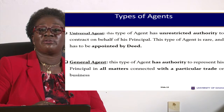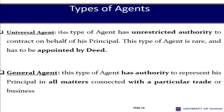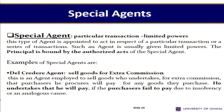A general agent has authority to represent his principal in all matters connected with a particular trade or particular business. Unlike the universal agent who can deal with all the businesses of the principal, the general agent's authority covers all matters but only those connected to a particular trade or business.